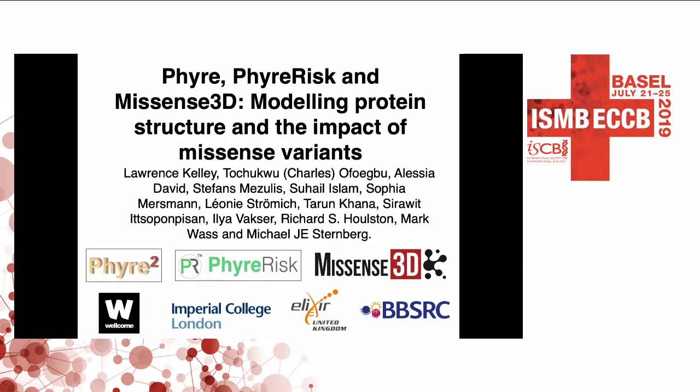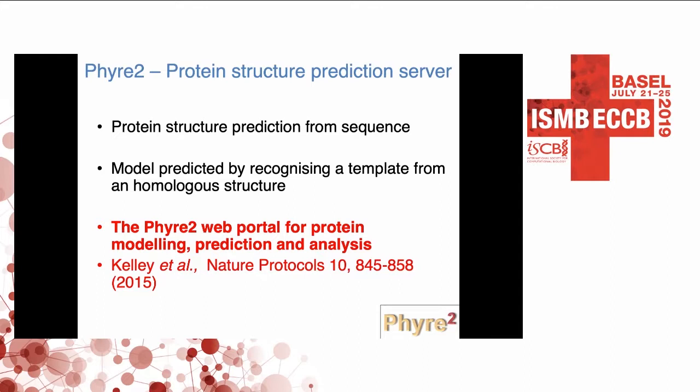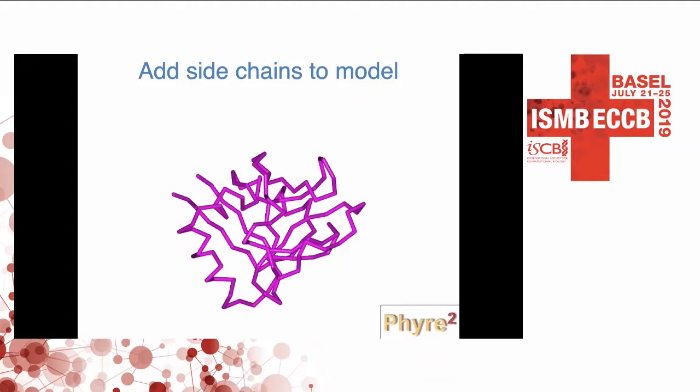With databases like UniProt having well over 100 million protein sequences, and the Protein Data Bank having only around 100 to 120,000 structures, it's important that we're able to model protein structure. Most of the residues are actually different, as these proteins may only share 25% sequence identity. So to get a full model, we then need to add on the side chains.